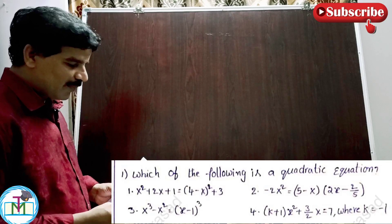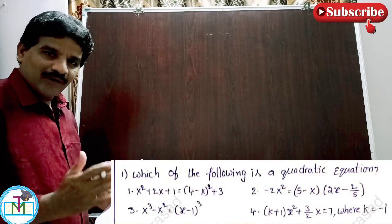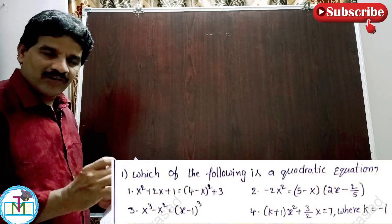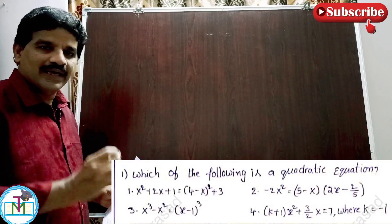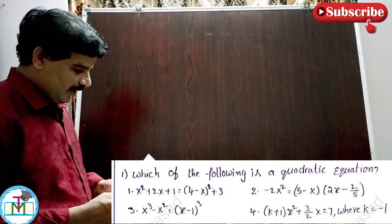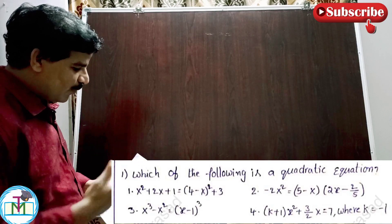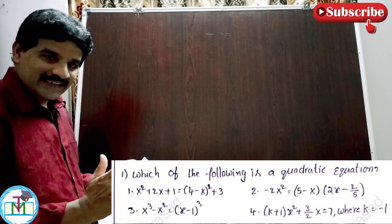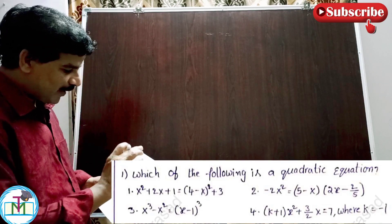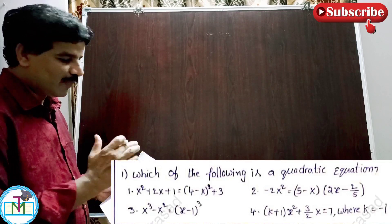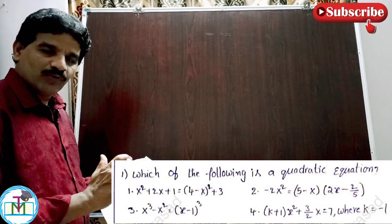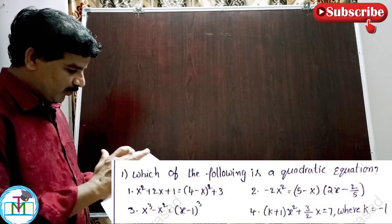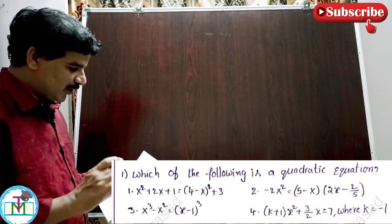For option 2, check whether the equation contains x². The left hand side has minus 2x² and the right hand side has x² minus x times 2x, which gives minus 2x². Both sides have minus 2x², so they cancel out. Therefore option 2 is also wrong — it is not a quadratic equation.